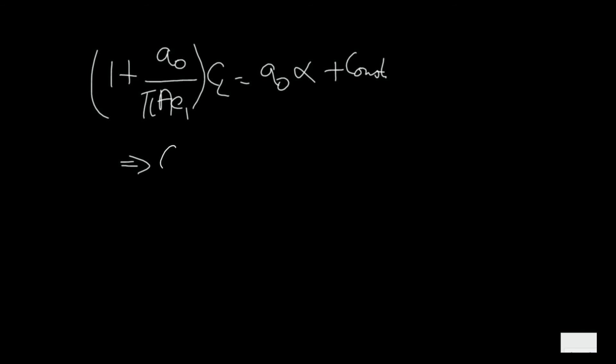Or CL of the wing is a0 times alpha divided by 1 plus a0 divided by pi A e1 plus the constant, also divided by 1 plus a0 divided by pi A e1.